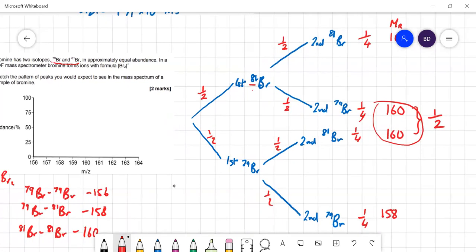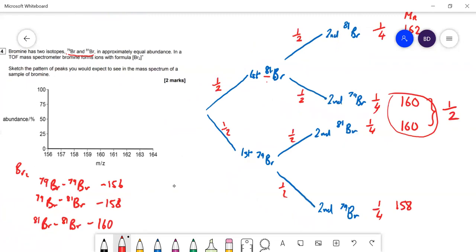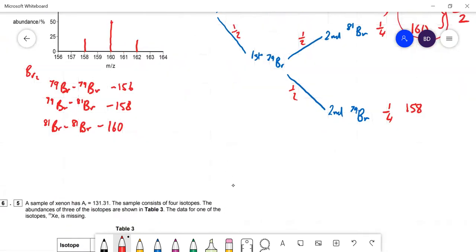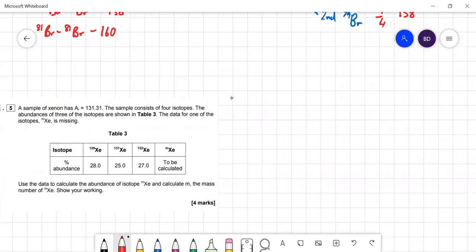So 50% is the 160, 25% is the 162, and 25% is the 158.